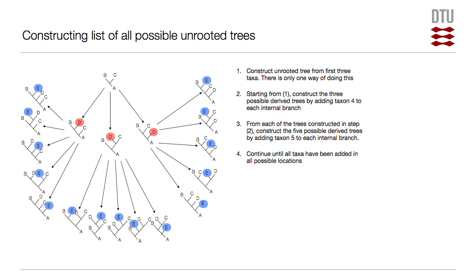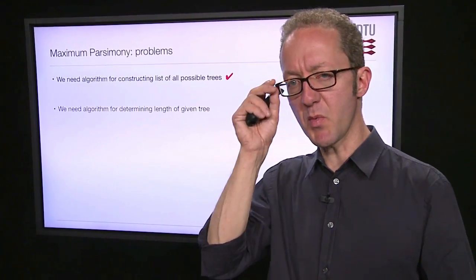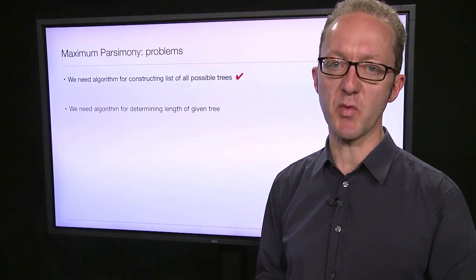From each of those trees, we can now add the fifth species using the same principle. On a tree with four species, we can add species e in five different places because there are five branches. We could add it on the a, b, c, or d branch, or on the central branch, giving us five possible derived trees from each starting tree. We repeat this process — each time adding the next species to every branch — until we hit the total number of species. At that point, we have the list of all possible trees. Problem number one solved. We have a simple algorithm for building the list of all possible tree topologies.